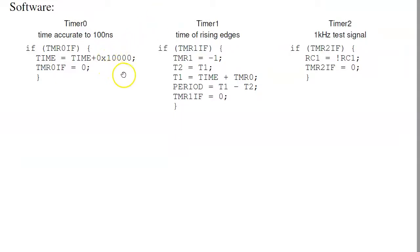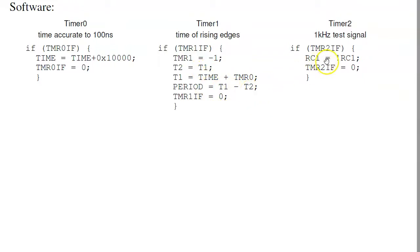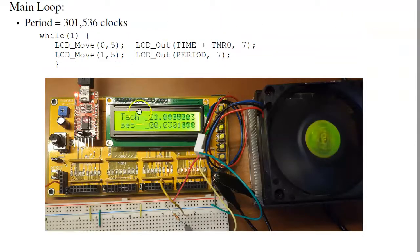To measure the time between edges, I'll have timer 0 measure time — counting clocks. Timer 1 is external event and interrupts every edge; that's why timer 1 is set equal to minus 1. You can't interrupt every clock, but you can interrupt every edge, especially when edges come at 33 hertz. I'll measure the current time of the edge, remember the previous time, and the difference between the two is the number of clocks between edges. Timer 2 just gives you 1 kHz as a test signal to verify you have something to measure.